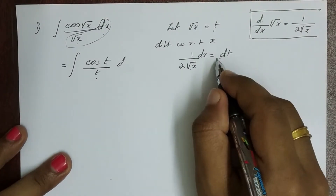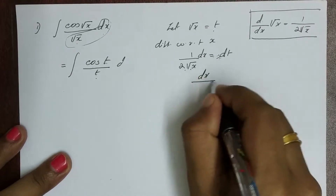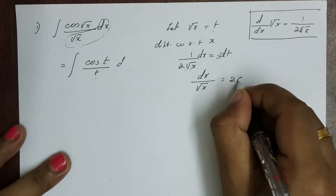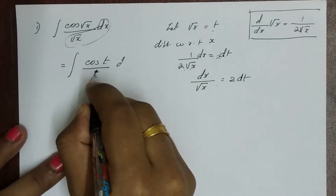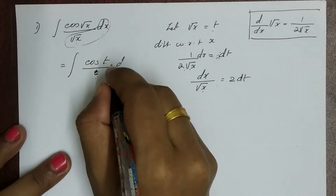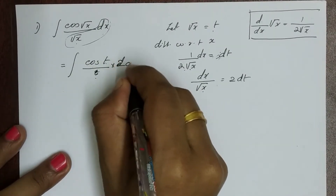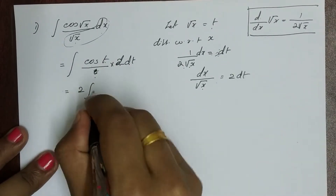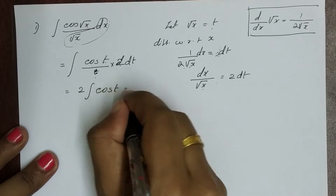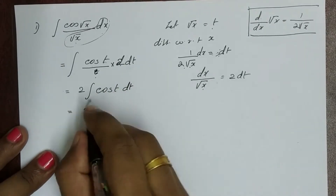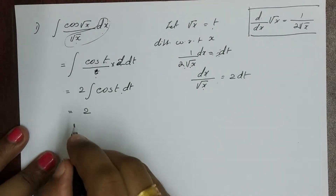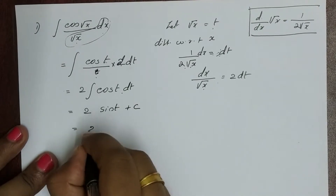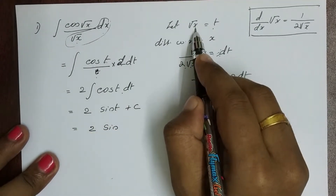Now, dx divided by √x is equal to 2 dt. So we multiply by 2. The integral becomes 2 into cos(t) dt, which gives 2 sin(t) plus c.